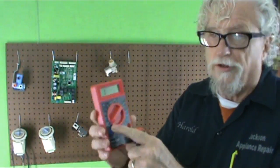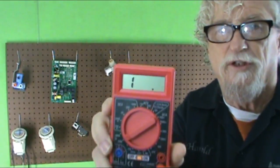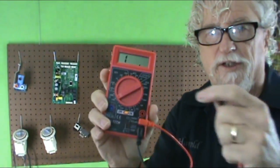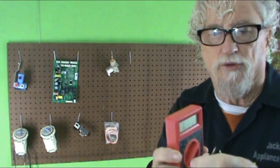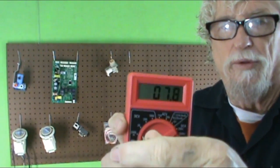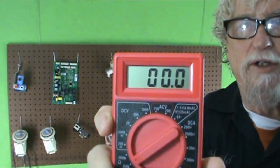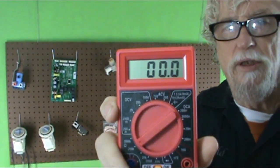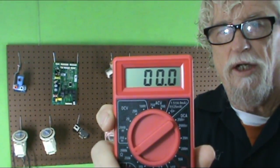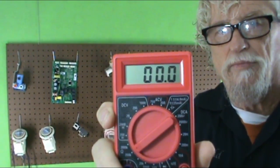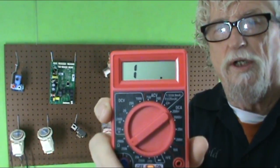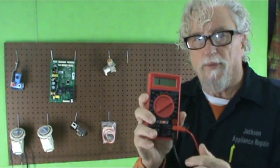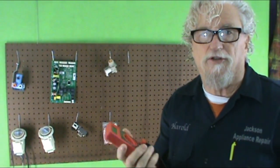Now I've got the meter on 200K and you can see that it's on one there. So we're going to test the leads to see if the meter's working properly. So we're going to touch the leads together and you're going to see it goes to zero. Then we're going to disconnect them, it's going to go back to one. So now you know the meter is working properly and when you go to test that part, you can test it.